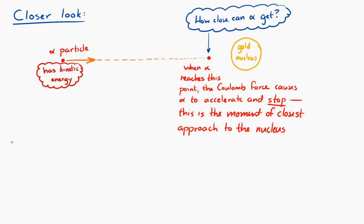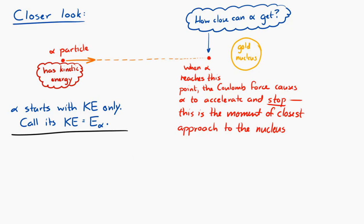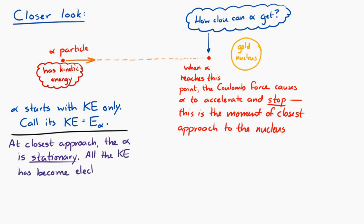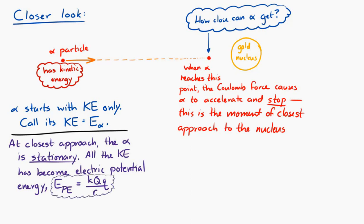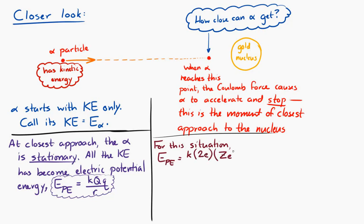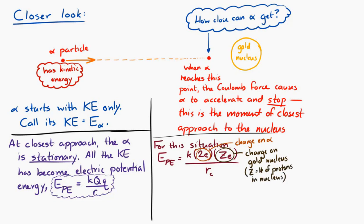Let's say that the alpha particle starts with a kinetic energy E_alpha. At closest approach, the alpha particle is no longer moving — all of the kinetic energy has been converted into electric potential energy, given by E_PE = K·Q·Q / R. For this situation, that's K times the charge on the alpha particle (2e) times the charge of the gold nucleus (Z·e), divided by R_C, the closest distance.